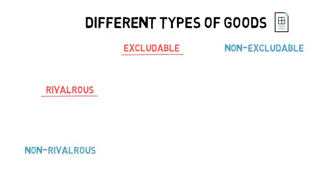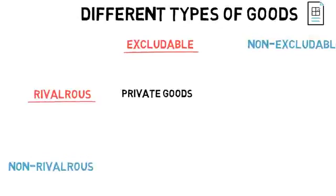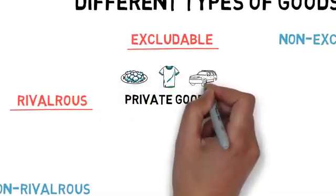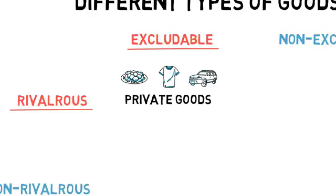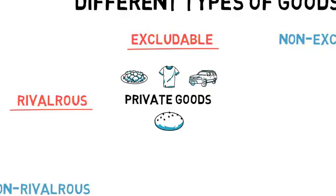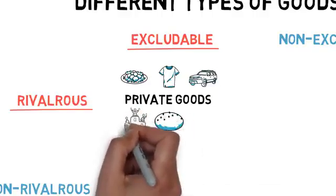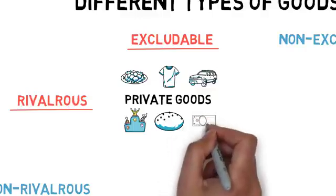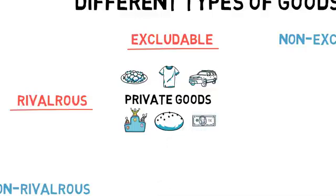This intersection represents private goods such as food, clothes, cars and other consumer goods. Bread, for example, is a scarce resource which can cause people to compete for it. A person will be excluded from obtaining bread if they are not willing to pay for it.